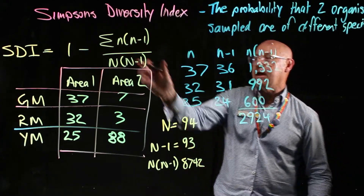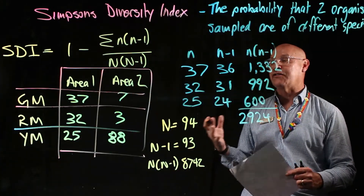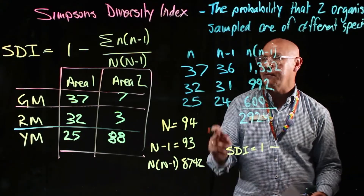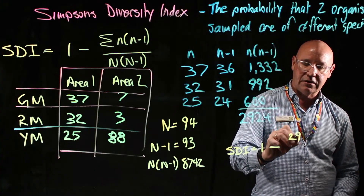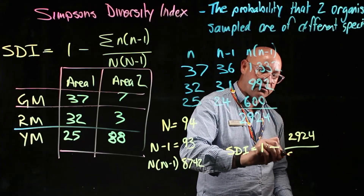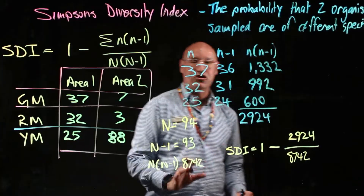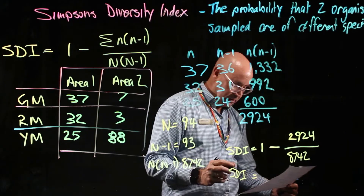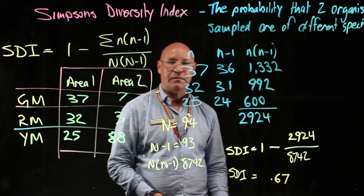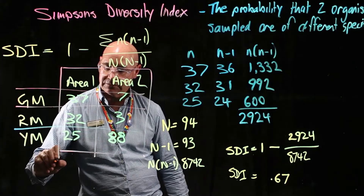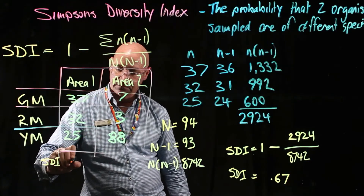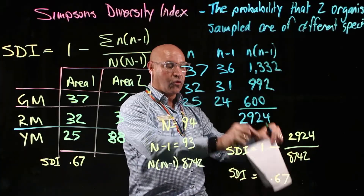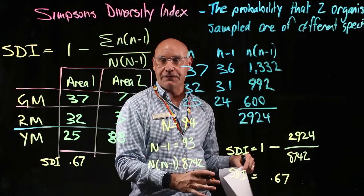Now we've done the numerator and the denominator, so we just substitute into the formula. SDI equals 1 minus 2924 divided by 8742. Putting that into the calculator, SDI equals 0.67. That is our SDI for area one, which means there's a 67% chance that two organisms sampled from the community will be of different species.